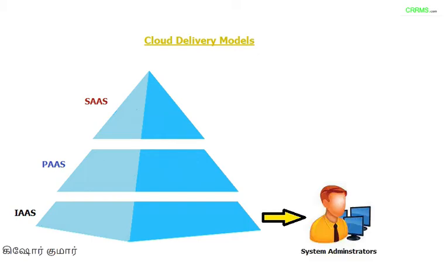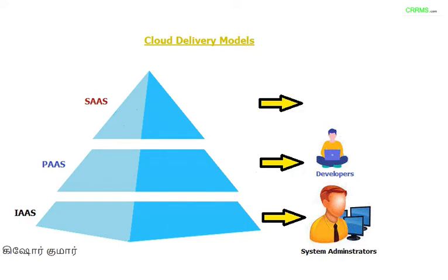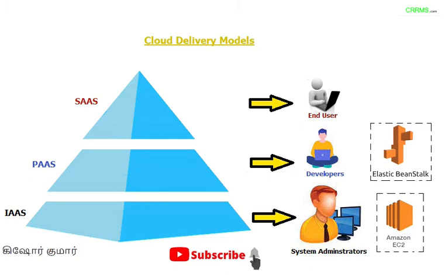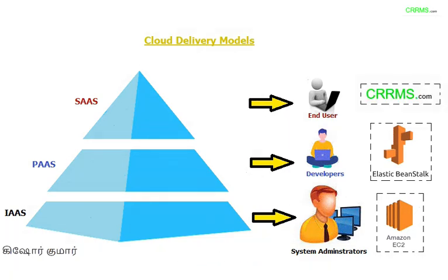To summarize: IaaS is primarily for system administrators who deploy services for the company — for example, Amazon EC2. PaaS is for application developers to develop end-user applications — for example, Elastic Beanstalk and Lambda. SaaS is the software that end users like you and me access directly — for example, simplilearn.com, which is centrally hosted using IaaS offerings and developed on PaaS platforms.